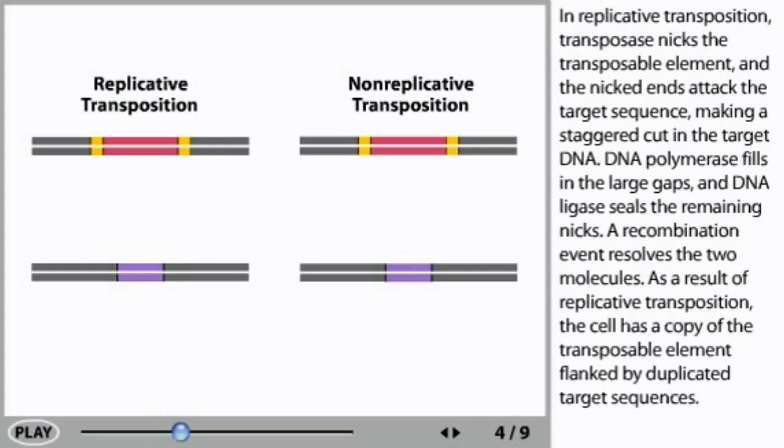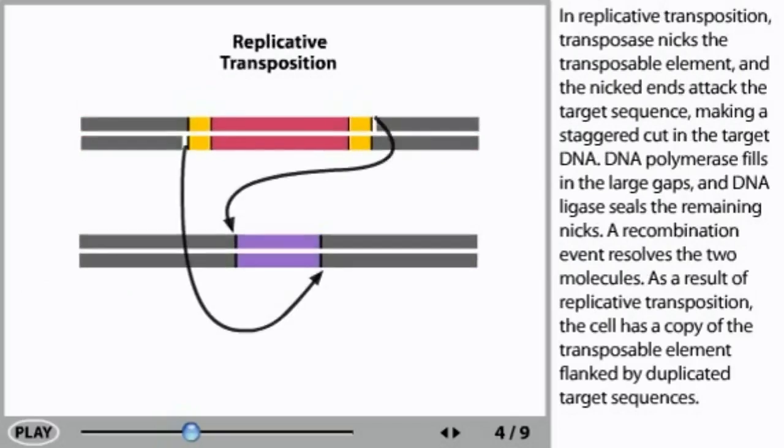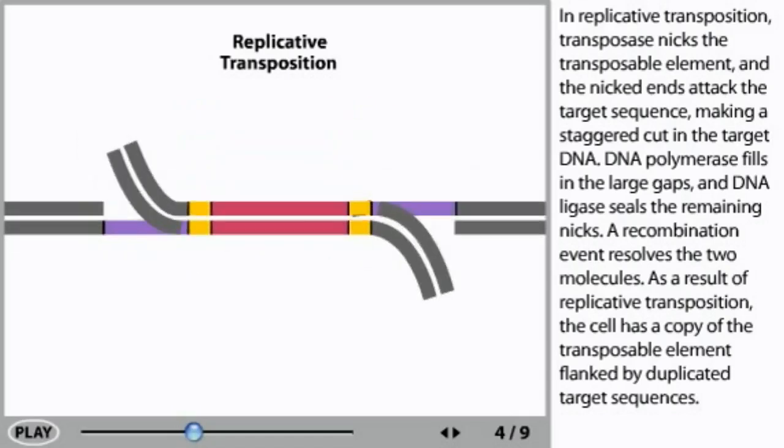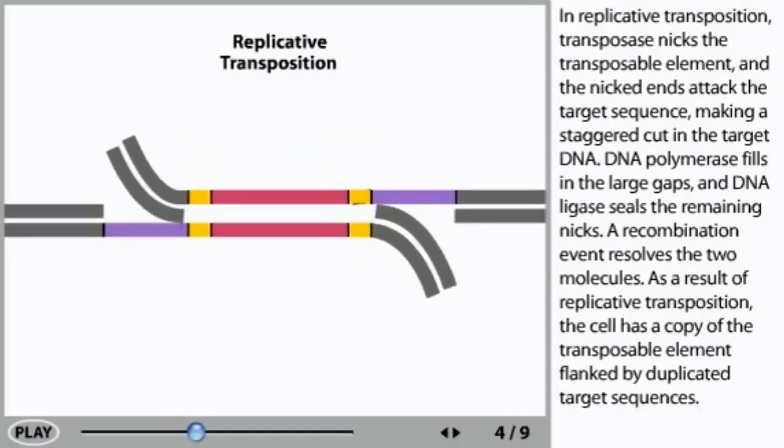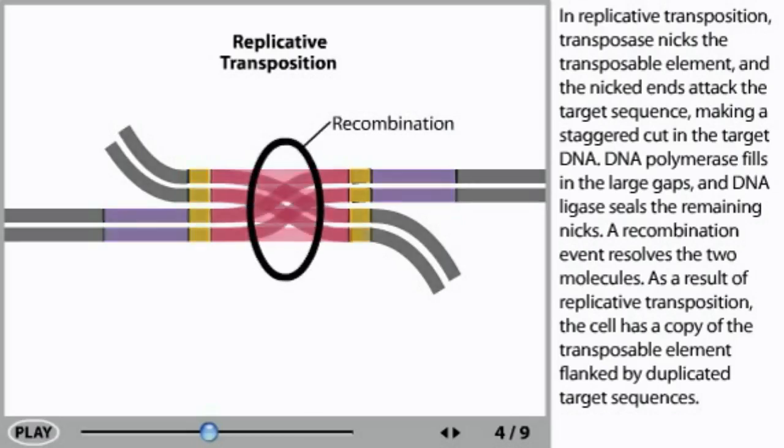In replicative transposition, transposase nicks the transposable element and the nicked ends attack the target sequence, making a staggered cut in the target DNA. DNA polymerase fills in the large gaps and DNA ligase seals the remaining nicks. A recombination event resolves the two molecules.